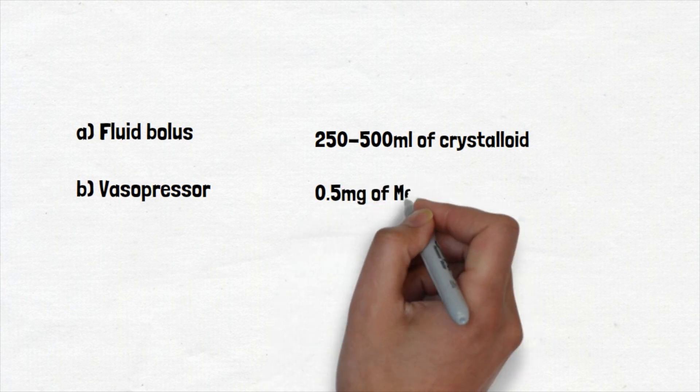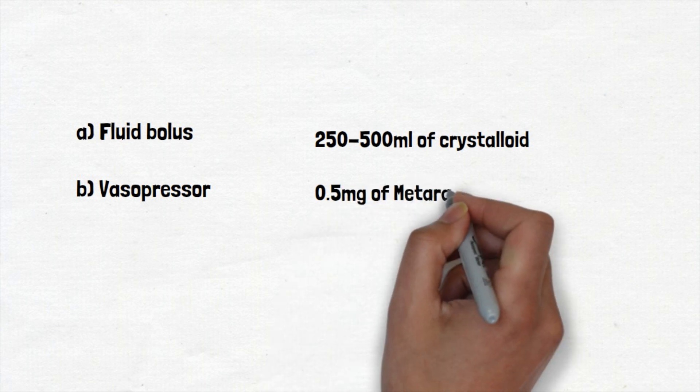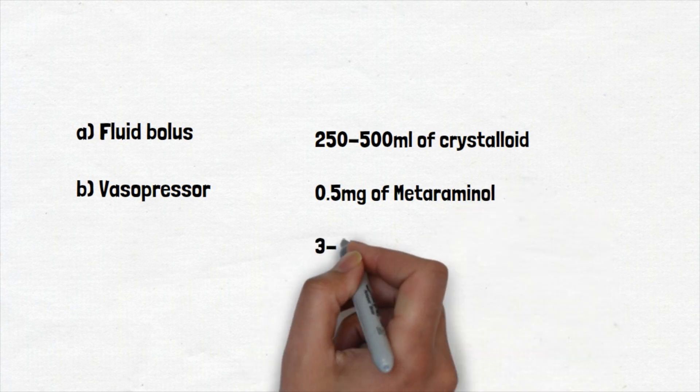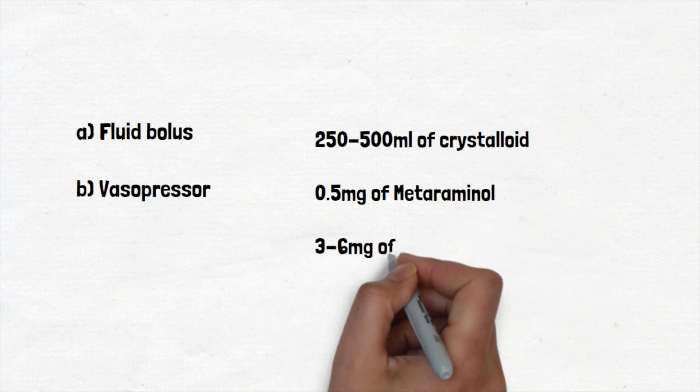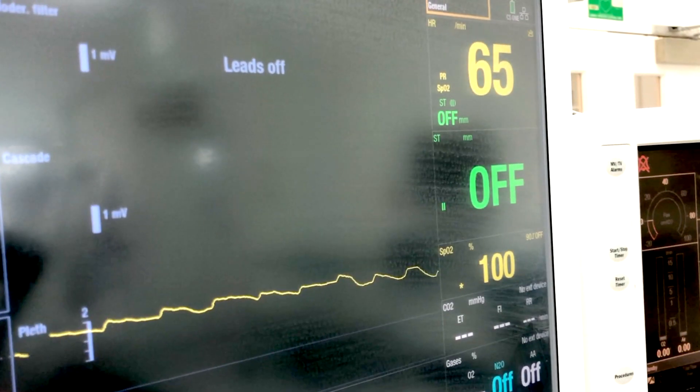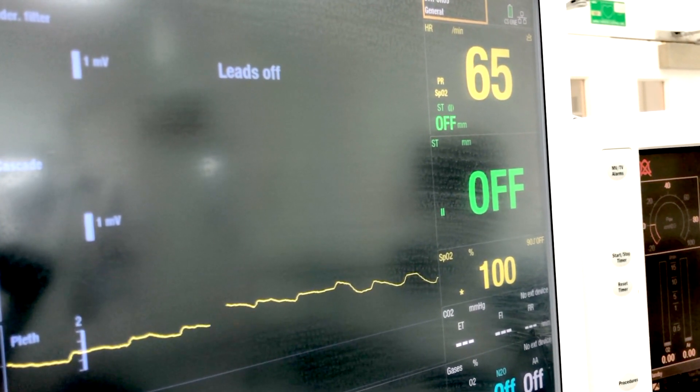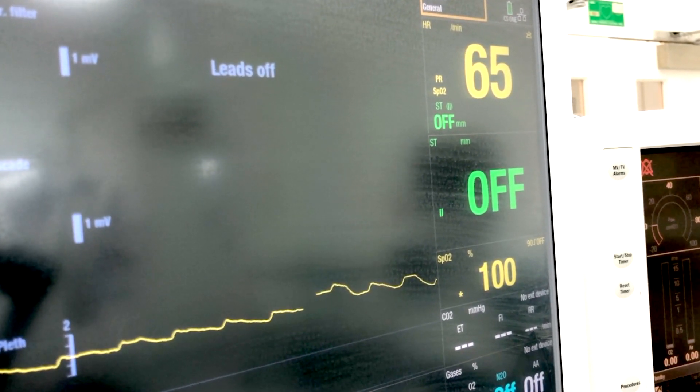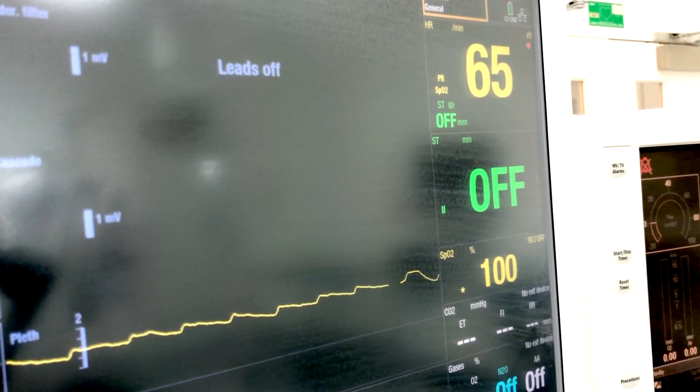Vasopressor is also a common step to take. Common choices are metaraminol or ephedrine. Metaraminol is an agonist at alpha adrenoceptors while ephedrine acts mainly at beta receptors with some alpha activity. The decision to use one or the other is often based on the heart rate, as giving metaraminol can cause a reflex bradycardia due to the baroreceptor reflex.